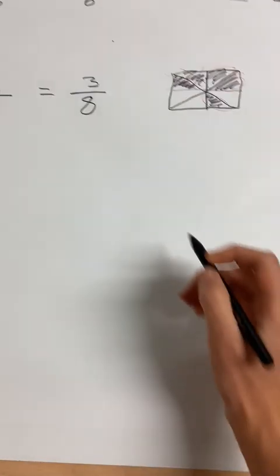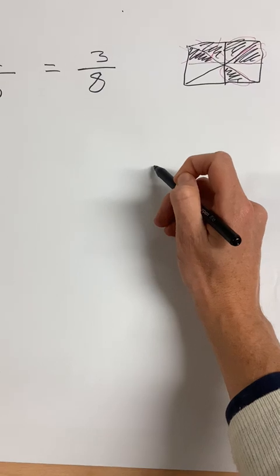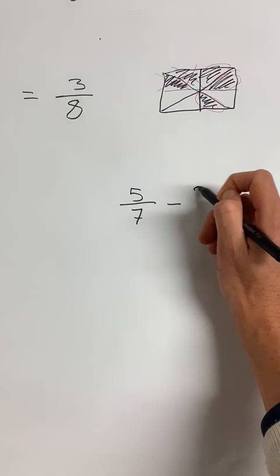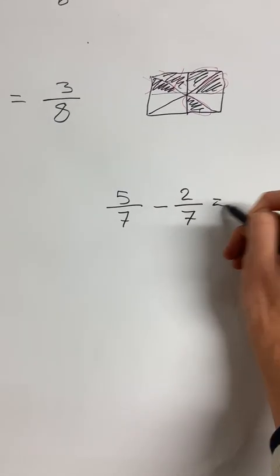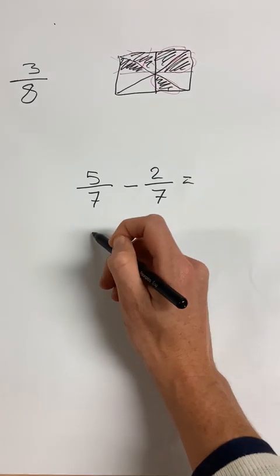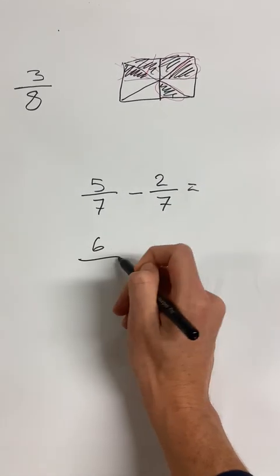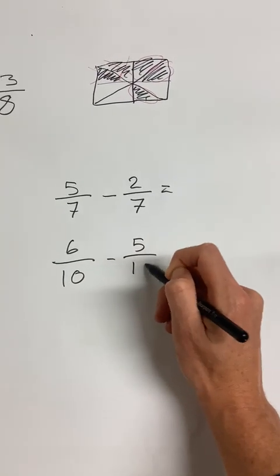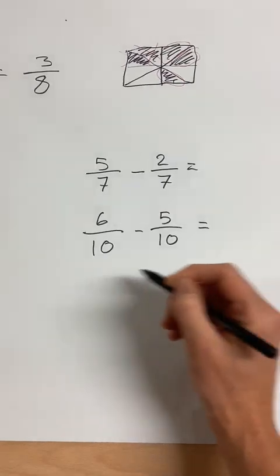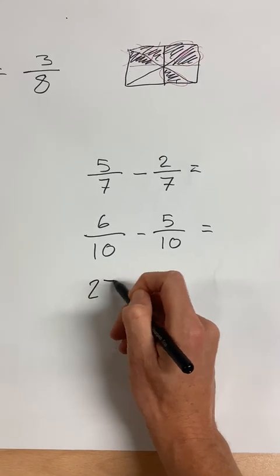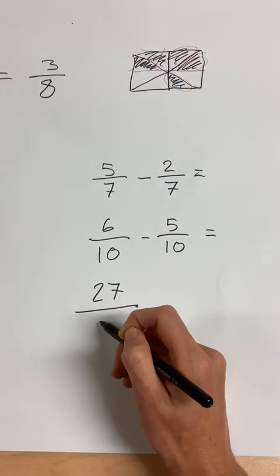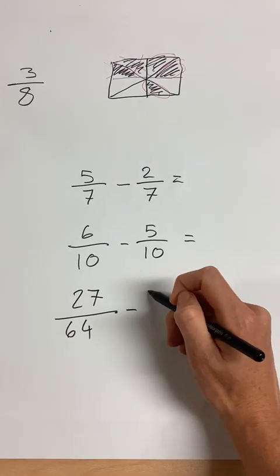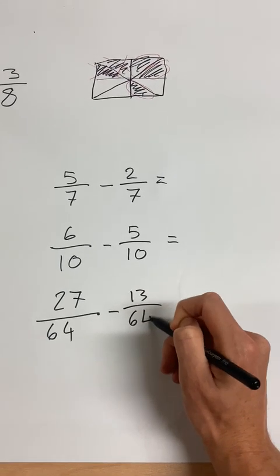And some subtraction ones. Five sevenths minus two sevenths. Six tenths minus five tenths. And what about twenty-seven sixty-fourths take away thirteen sixty-fourths.